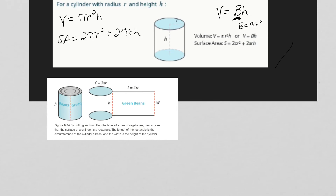I found this picture to show that the reason there are 2πr² terms is because π × r² is your area of a circle. And since we have two circles on the top and bottom of the can, that's why it's 2πr².